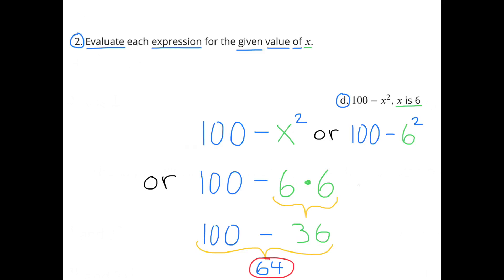Part d: 100 minus x squared, when x is 6. That's 100 minus 6 squared, or 100 minus 6 times 6. 6 times 6 is 36, so 100 minus 36 is 64. When x is 6, 100 minus x squared would be 64.